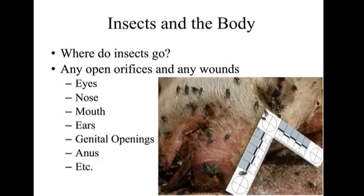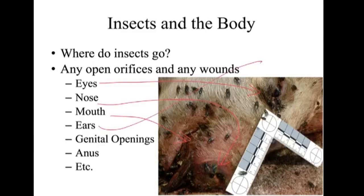Insects on a body will go through any open orifice or wound. They'll go through the eyes, enter in the nose, the mouth, ears, genital openings, and the anus. Also, any wounds on the body — an insect will colonize anything where there's a break in flesh. That's where they will inhabit first.